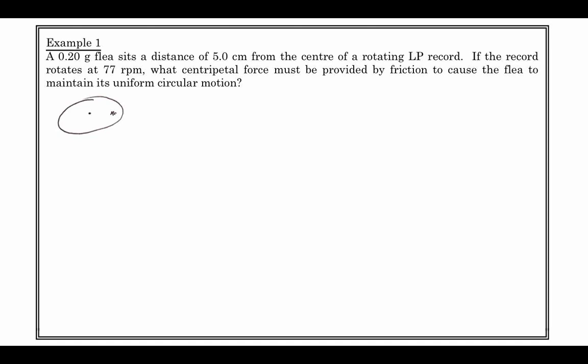The friction is what's keeping this little guy in place so that he doesn't slide around. If we take a free body diagram of the flea at some point on the record, he has a normal force, a force of gravity, and a force of friction that's keeping him moving in uniform circular motion pointed towards the center of the circle. We know his mass, the radius, 77 rpm. We're turning grams and centimeters into kilograms and meters, and we know his rotations per second, his frequency: 1.28 rotations per second.